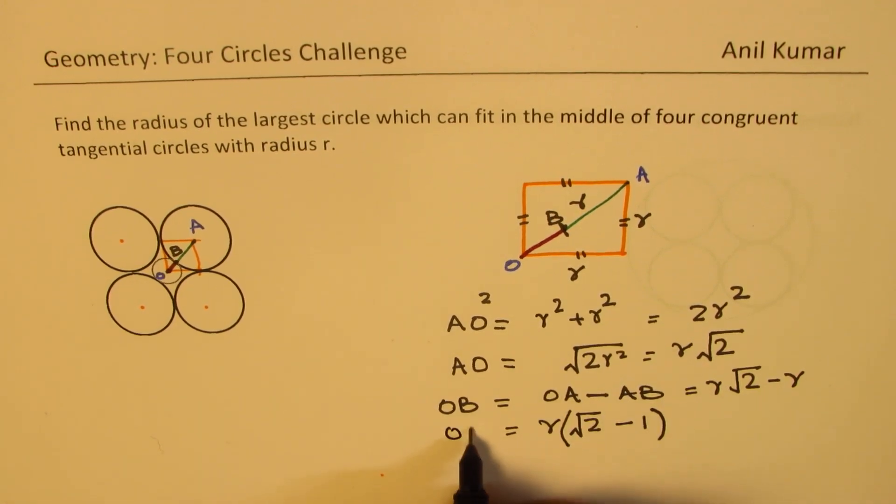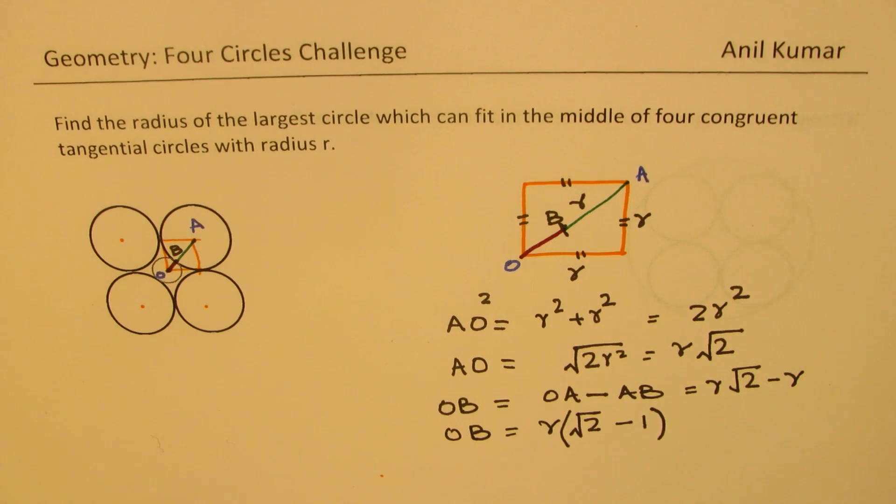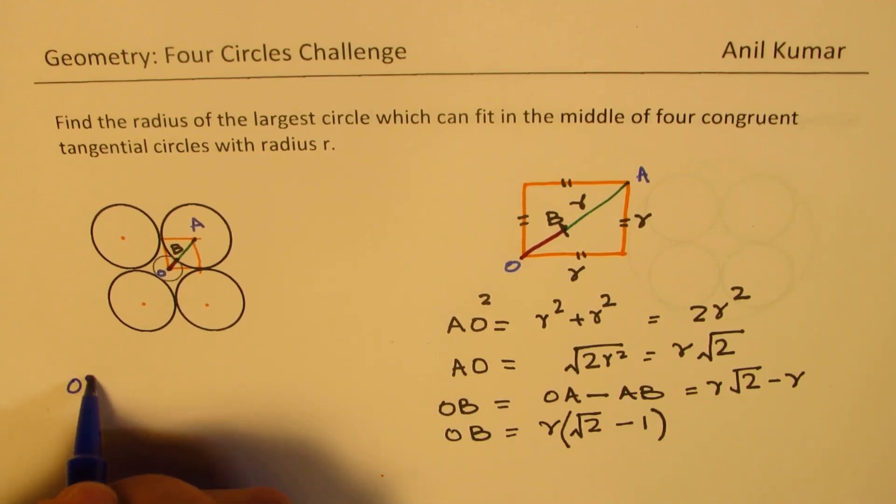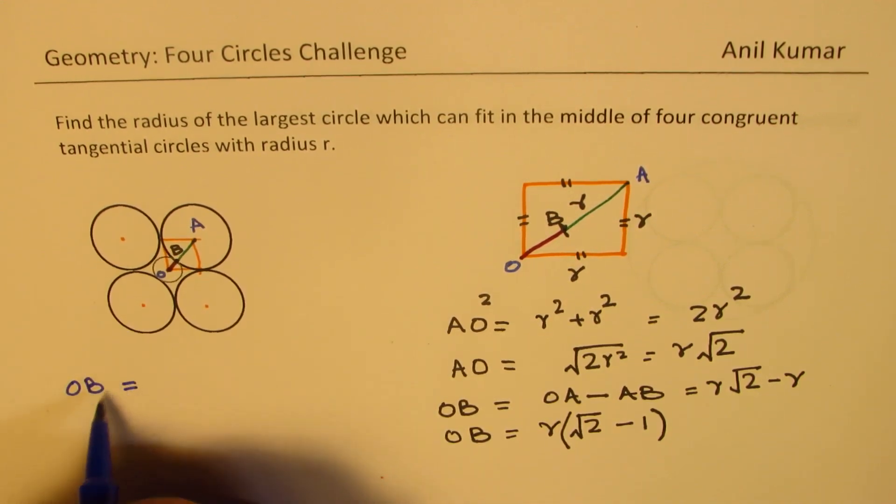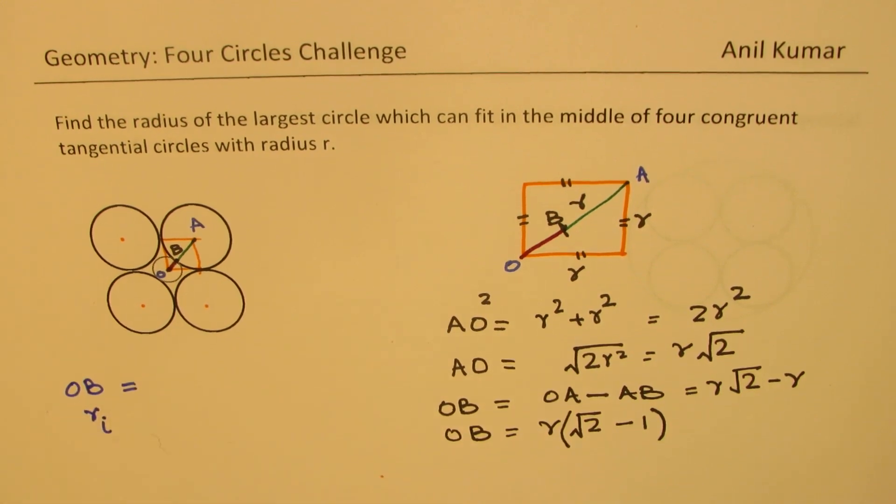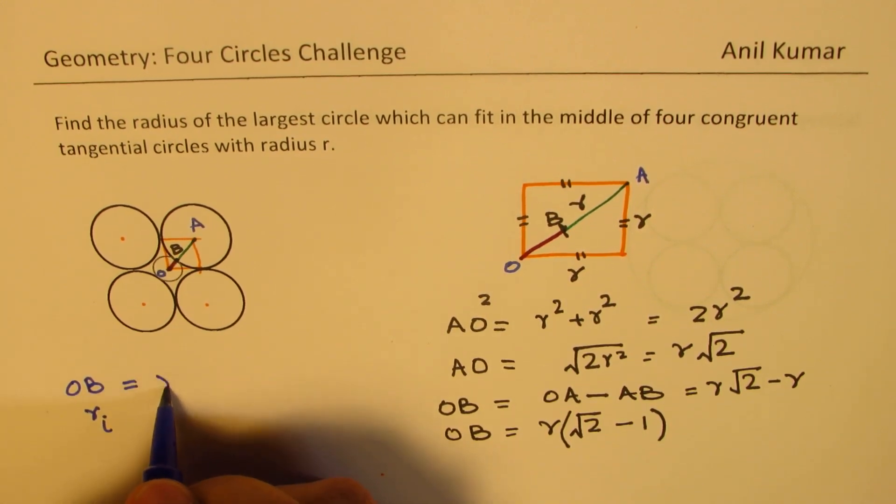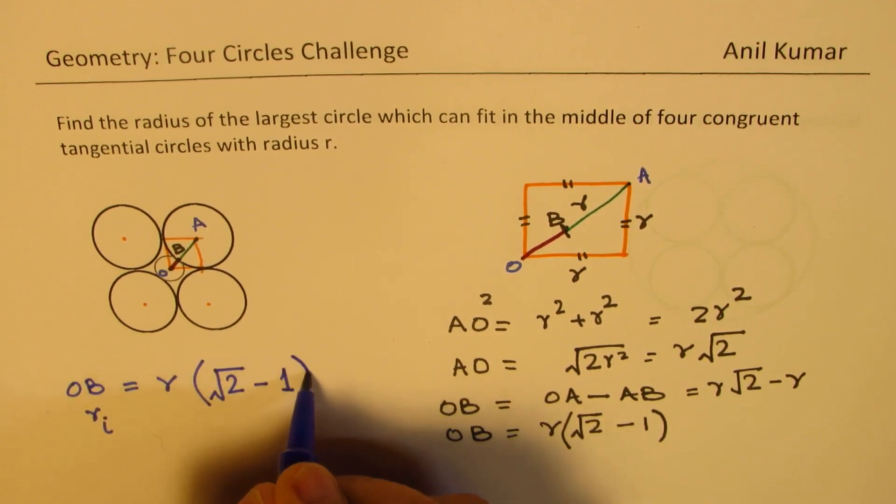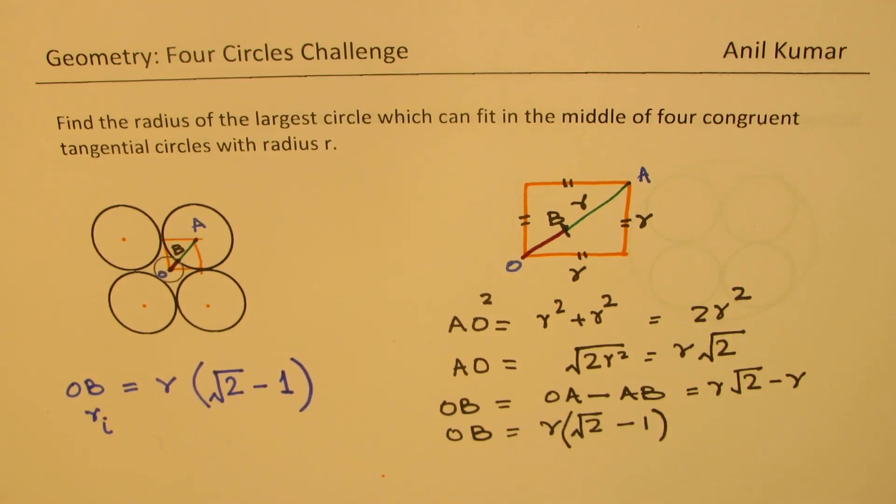So we get our result that OB, the radius of the circle which can be inscribed, is equal to r times square root of 2 minus 1. So we get the answer. So we get r inscribed, let's say r_i, is radius of the circle times square root 2 minus 1. Is that clear to you? So that becomes an easy way of finding this out.